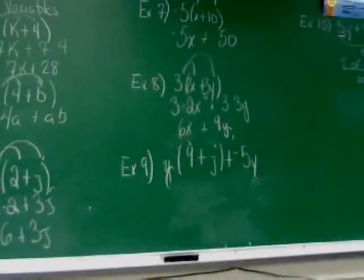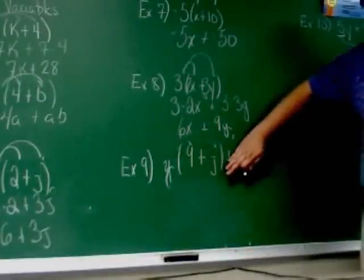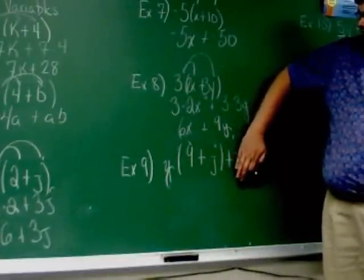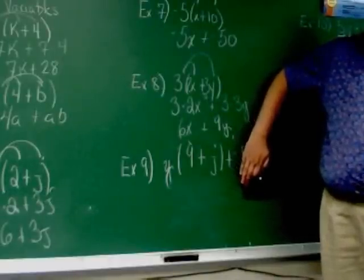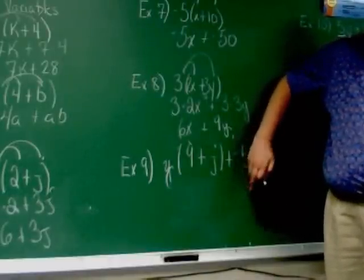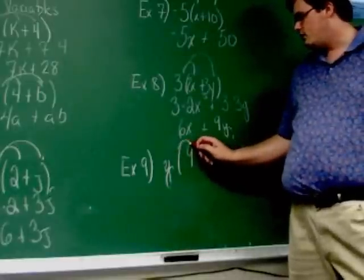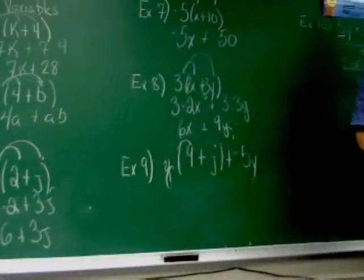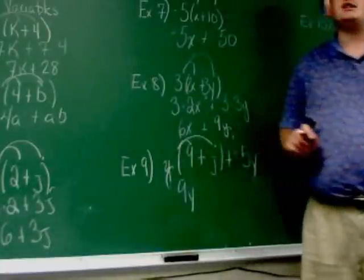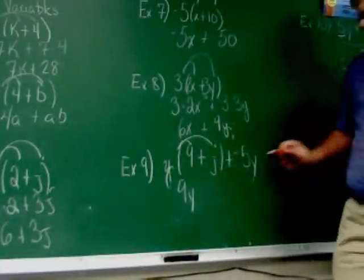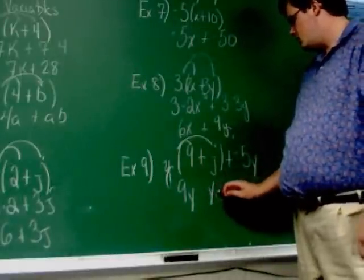Alright. Now, Example 9 is a little bit different because there's an extra step they want you to practice here. Forget this is here for the moment. Forget that negative 5Y is there. Take Y through to the 9, Y through to the J, do the distributive property to start. So Y through to the 9, that's going to give me 9Y. 9Y, good. And Y through to the J, that's going to give me YJ.